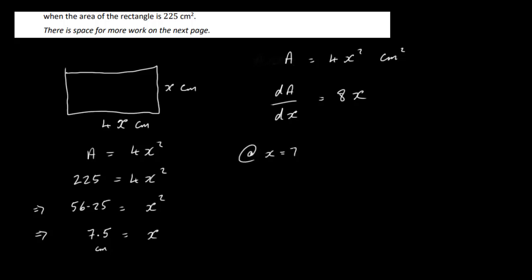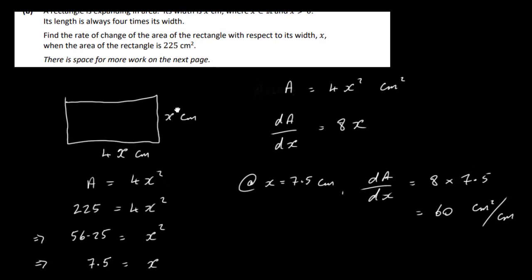At x equals 7.5 centimeters, dA/dx equals 8 times 7.5, which is 60. That is the rate of change of the area with respect to the width. The units are centimeters squared per centimeter, since area is in centimeters squared and width is in centimeters. So that's the answer to that part.